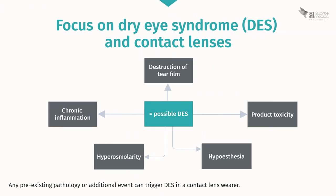Let's focus on dry eye syndrome and contact lenses. Dry eye syndrome can occur in any contact lens wearer for a variety of reasons. Wearing contact lenses can damage the tear film, cause chronic inflammation and modify the tear composition, resulting in hyperosmolarity. Cleaning products can also have a toxic effect on the surface, and patients who wear lenses can present corneal hypoesthesia after several months or years. Any pre-existing pathology or additional event can trigger dry eye syndrome in a patient who wears contact lenses.